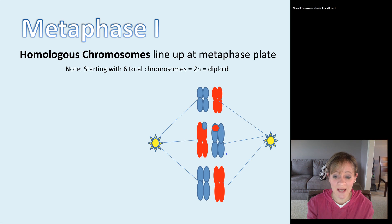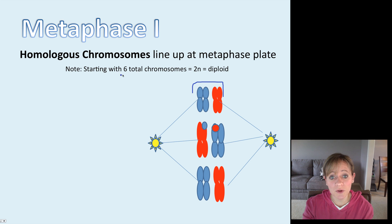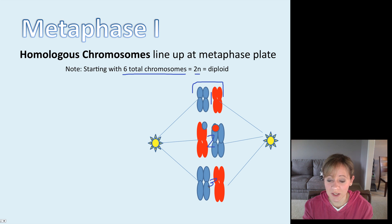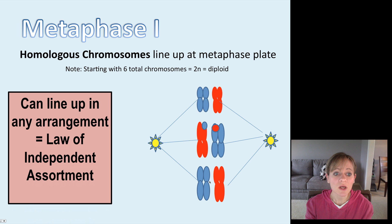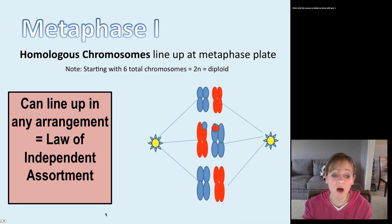Then metaphase I comes next, and the homologous chromosomes — these pairs of chromosomes — are lining up at the center, which we call the metaphase plate. Remember that what we started with was six chromosomes, so six was 2N, which was diploid — one, two, and three pairs. Another really important source of variation is that these can line up in any fashion. It could be all blue and all red, or any combination thereof. This is called the law of independent assortment, and again this creates genetic variation.